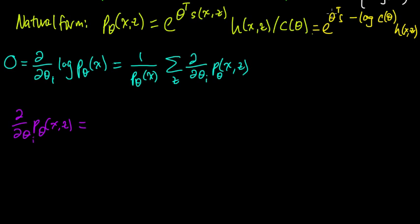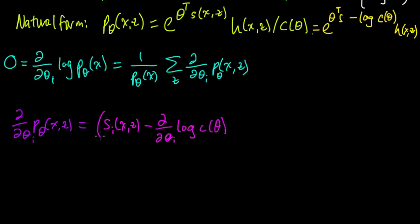The derivative of the exponent gives us S_i of X and Z minus the derivative with respect to theta_i of log C of theta. We keep the original exponential, which is just P_theta of X and Z. So the derivative of the joint equals S_i of X and Z minus d/d theta_i of log C of theta, all times P_theta of X and Z.